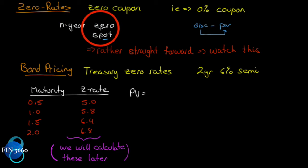It's hard to find a five-year zero. Typically you can find zero rates for anything less than one year, because money market instruments — anything with initial issuance to maturity of a year or less — are sold at a discount. So it's easy to find a three-month, six-month, or one-year zero rate. It's hard to find a two-year zero rate unless you're looking at strip bonds.